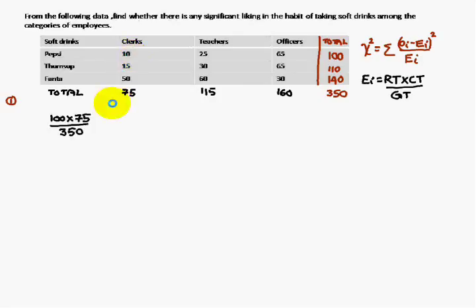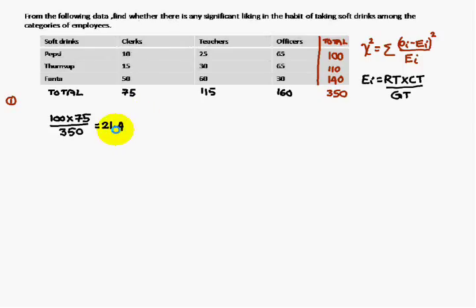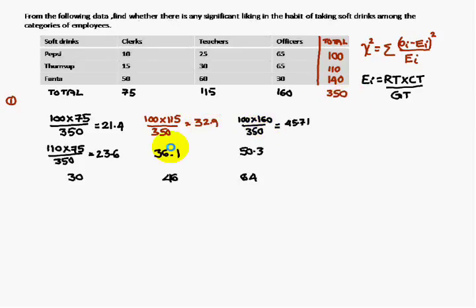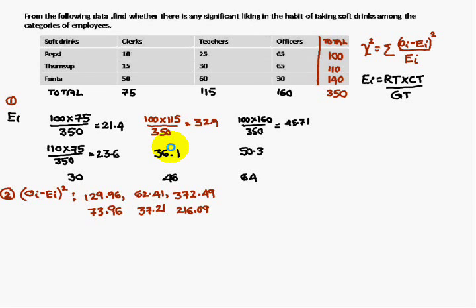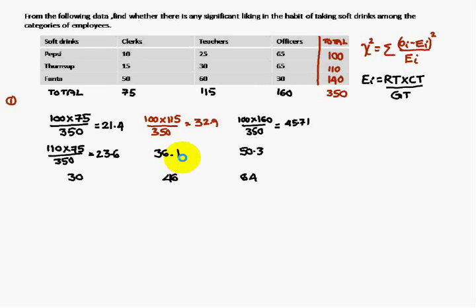Using the expected frequency formula: the row total is 100, the column total for this cell is 75, and the grand total is 350 — giving 21.4. Similarly, for the next cell the row total is 100, the column total is 115, and the grand total is 350. You compute that, and continue for the remaining values.